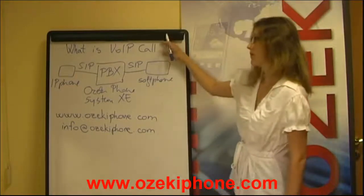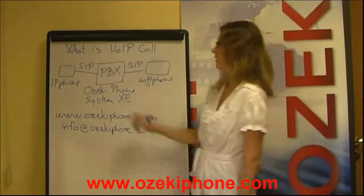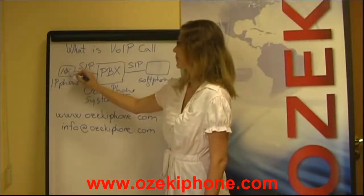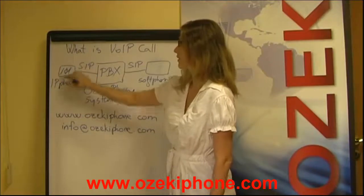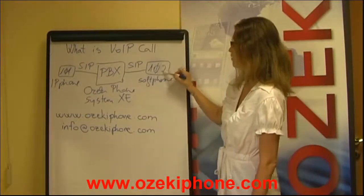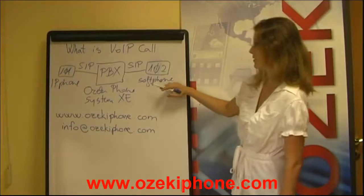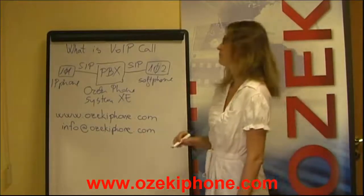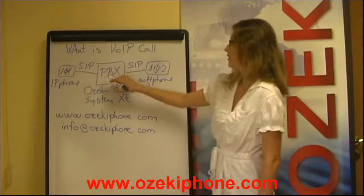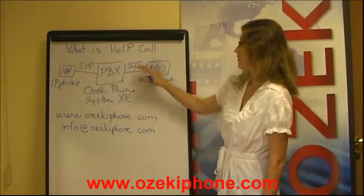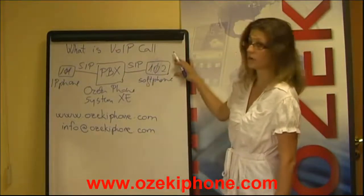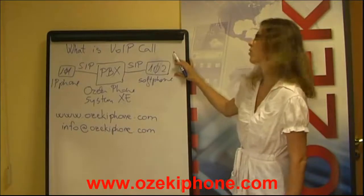A voice over IP call is made when, for example, this extension — that is 101 — dials 102, that is the extension for the soft phone. The PBX then transmits the call to the proper other extension, 102.